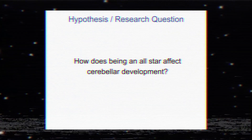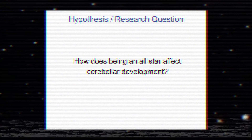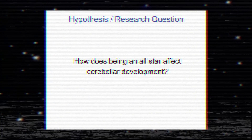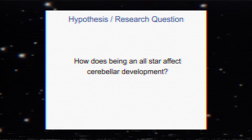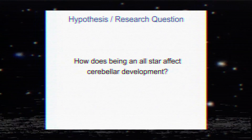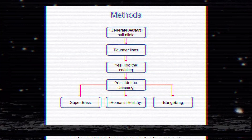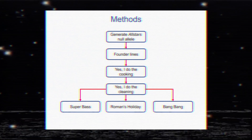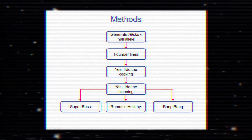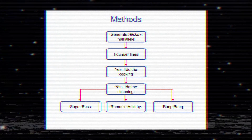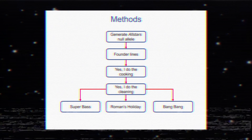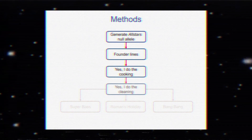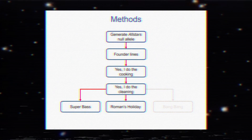The next slide is your hypothesis or research question. This slide shouldn't be too fancy — the goal is to showcase your research question so that the audience can think about it as well. Next is your research methods. This slide serves as a blueprint of your experiments and how you went about collecting and analyzing your data. I like to use a flowchart for this.